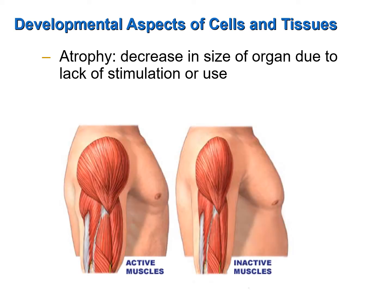For example, here we have a before and after — on the left, active muscles; on the right, atrophied muscles. Let's say a person may have broken their arm and the arm had been immobilized in a cast where they couldn't bend their elbow or possibly their shoulder. Due to that lack of use, the muscles have actually atrophied or wasted away. Typically, to regain full use of the arm, the individual has to go to physical therapy and participate in exercises to rebuild those muscles.